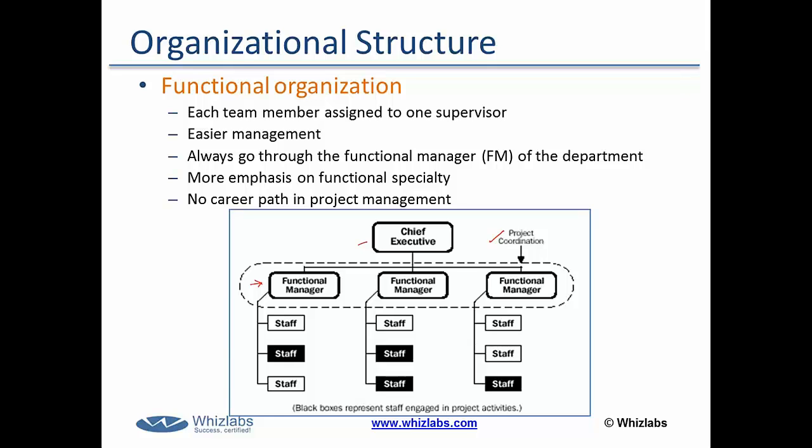The main characteristics of a Functional Organization are that each team member is assigned one supervisor, that is the Functional Department Head. This leads to easier management of human resources. The Project Manager always needs to go through the Functional Manager for any decision making. There is more emphasis on functional specialties and no career path for project management.